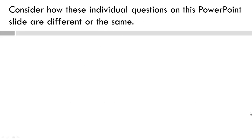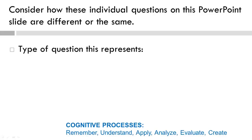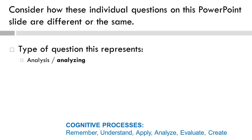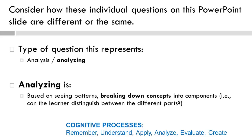Consider how these individual questions on this PowerPoint slide are different or the same from the others. The questions on these slides reflect the various cognitive processes within the revised taxonomy table. This particular question — asking you to consider the various concepts discussed thus far and break them into smaller components for the purpose of comparing — could be considered an analyzing type of question. It addresses higher cognitive processes and nudges students to move beyond recall or recognition.